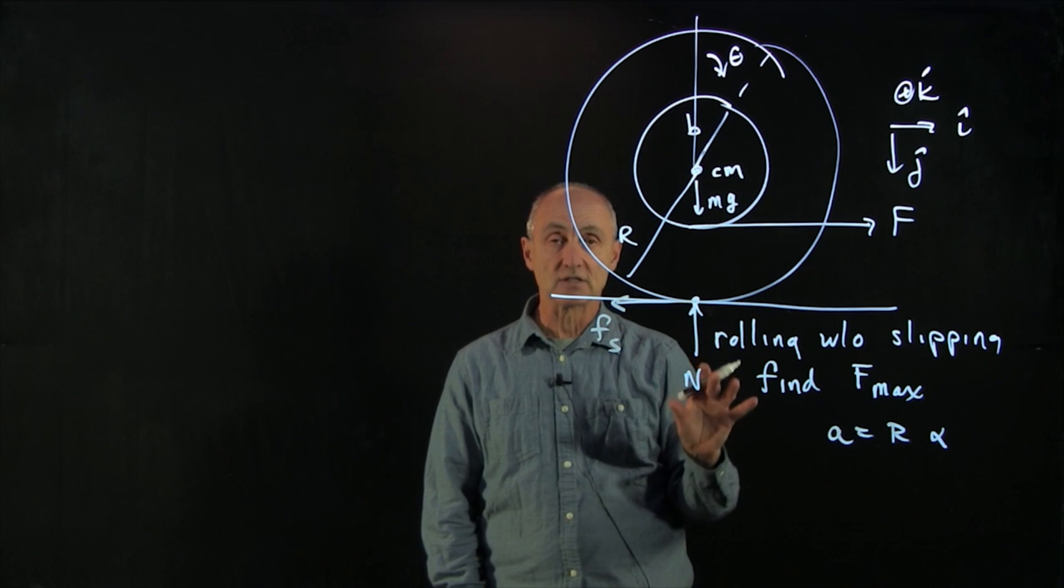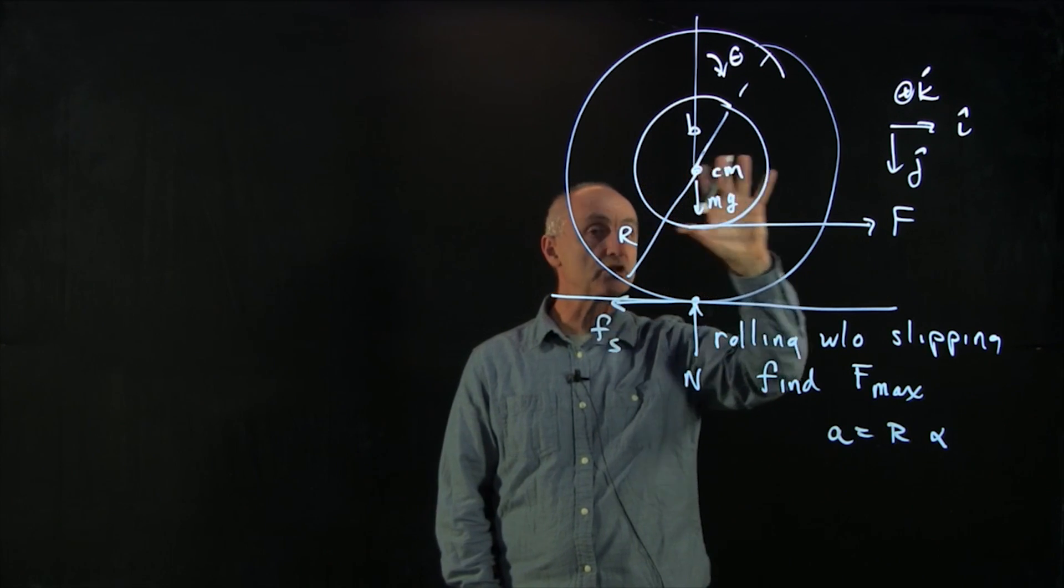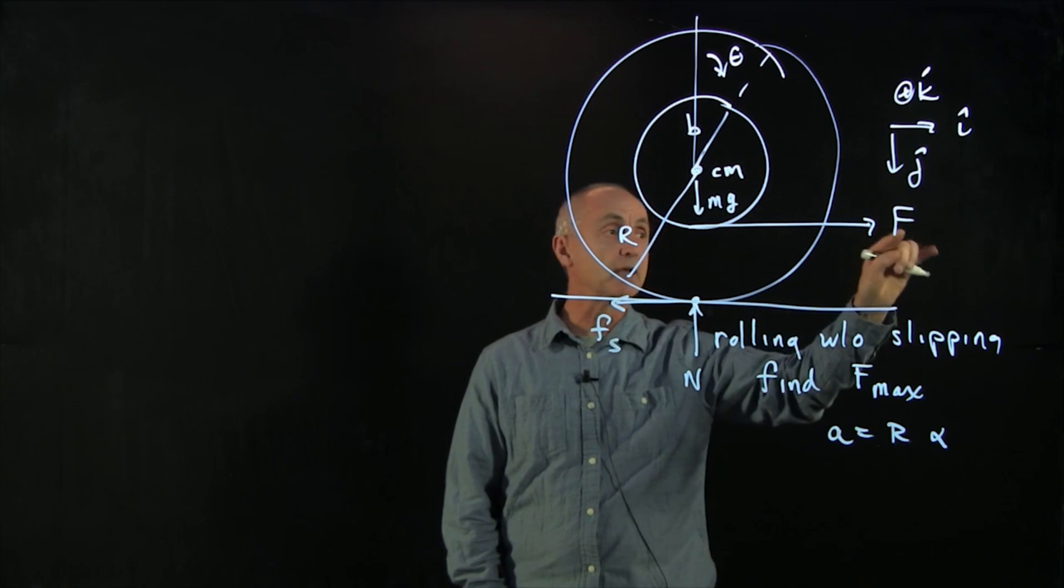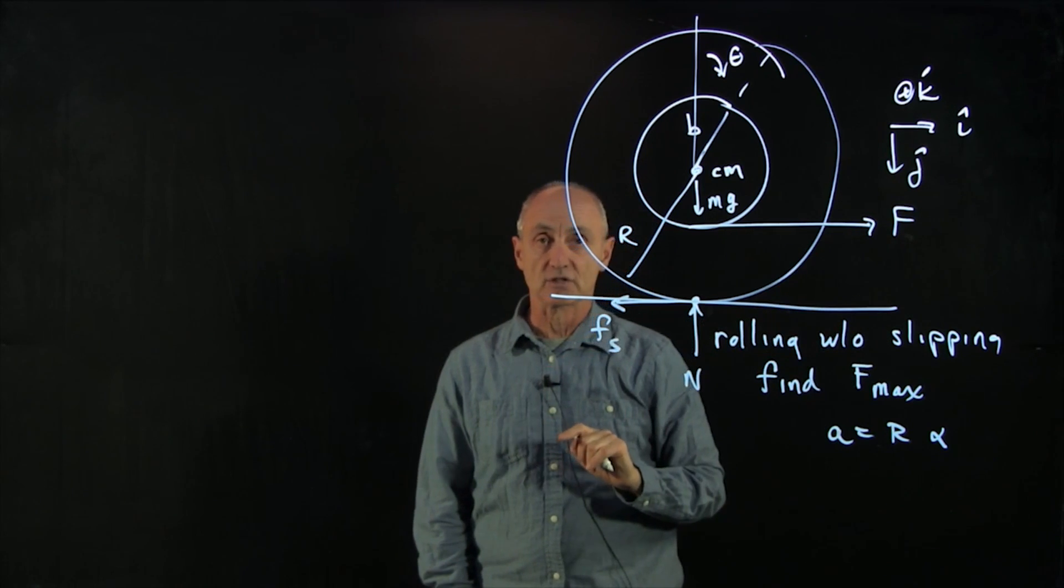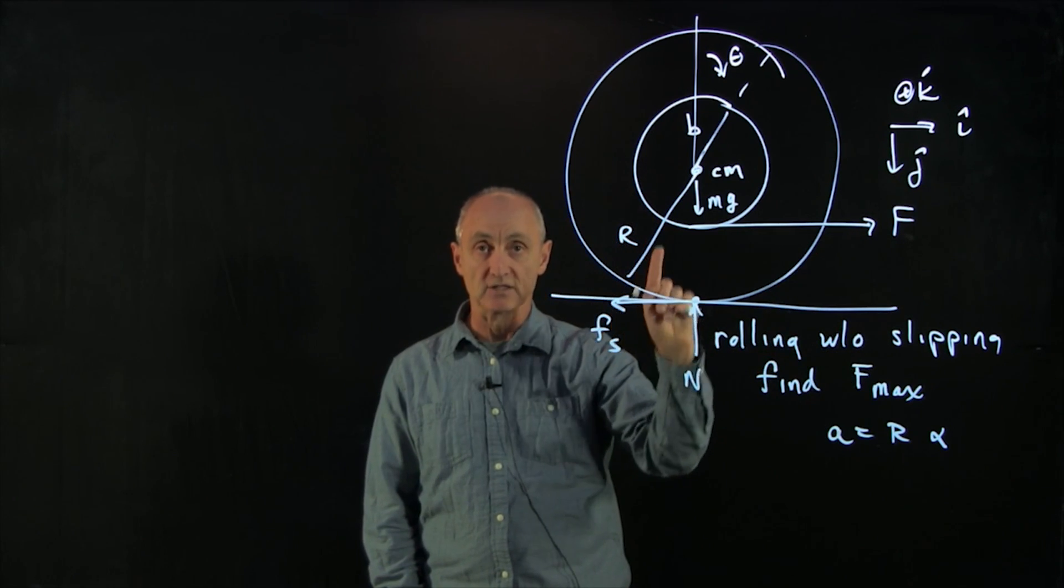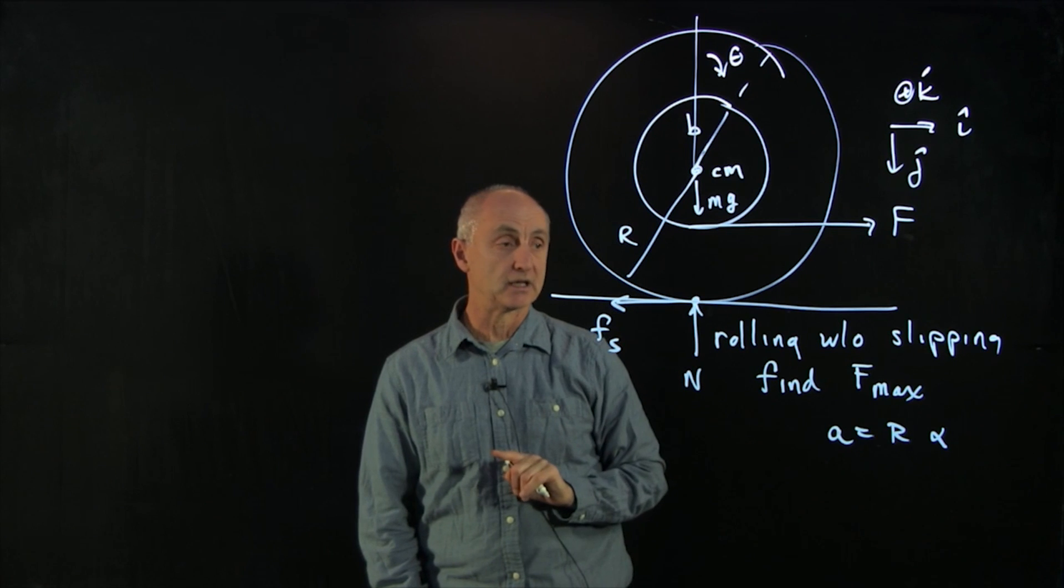So once again, we have a case, unlike a wheel which is just rolling along a horizontal plane, because we're pulling this yo-yo string, the static friction is not zero. Static friction depends on everything else that's happening in the system.